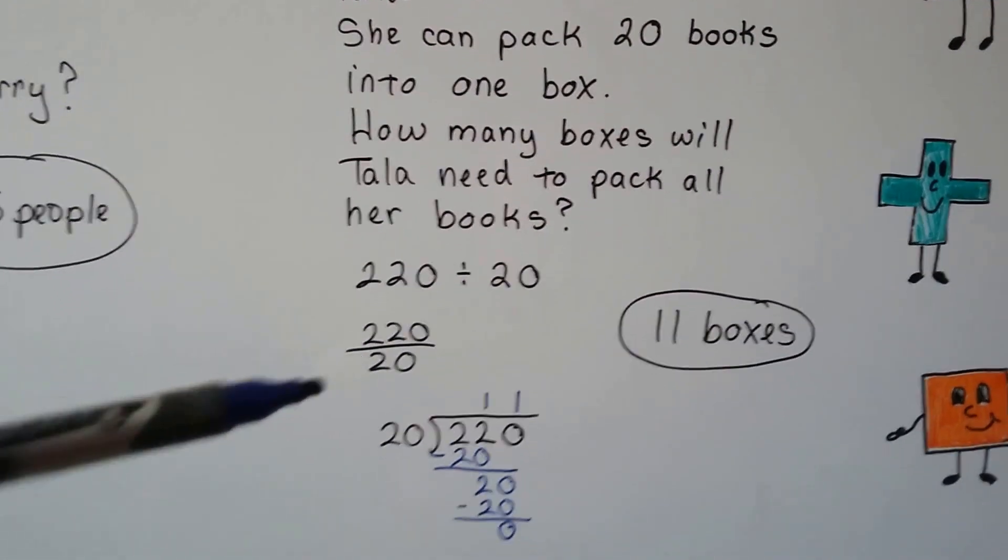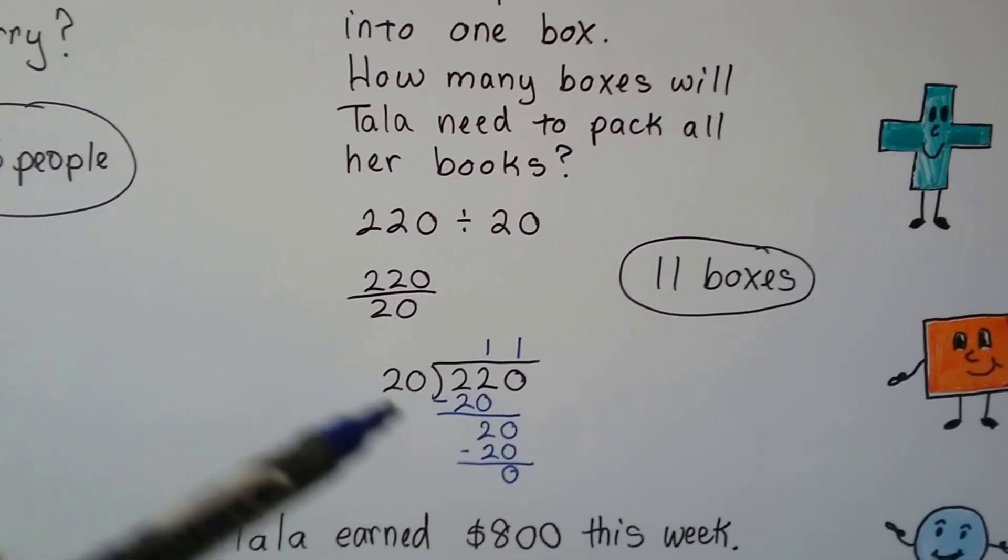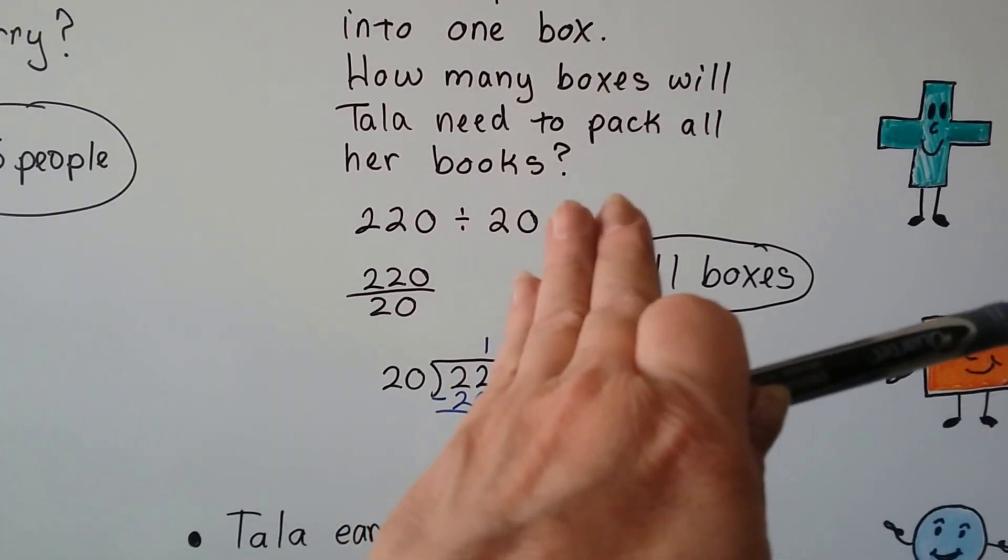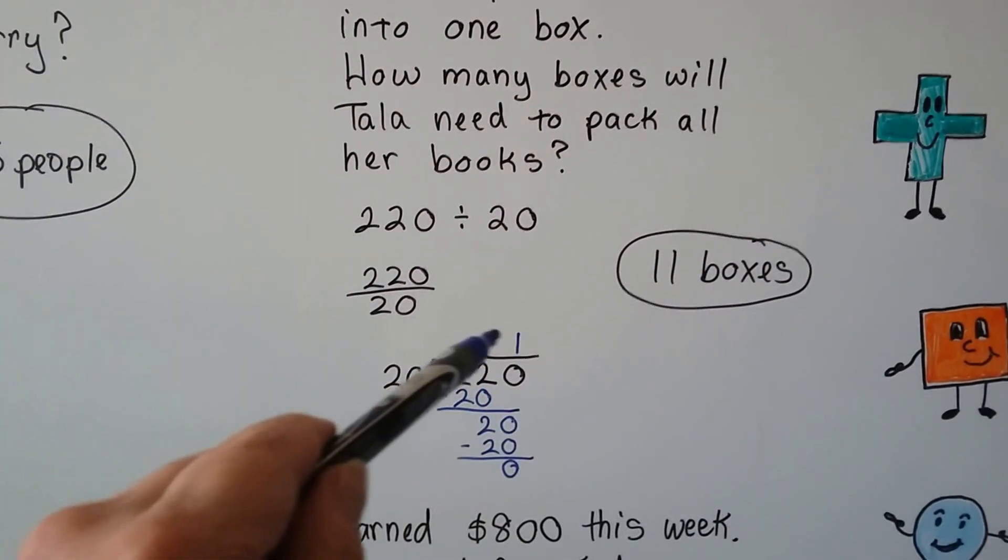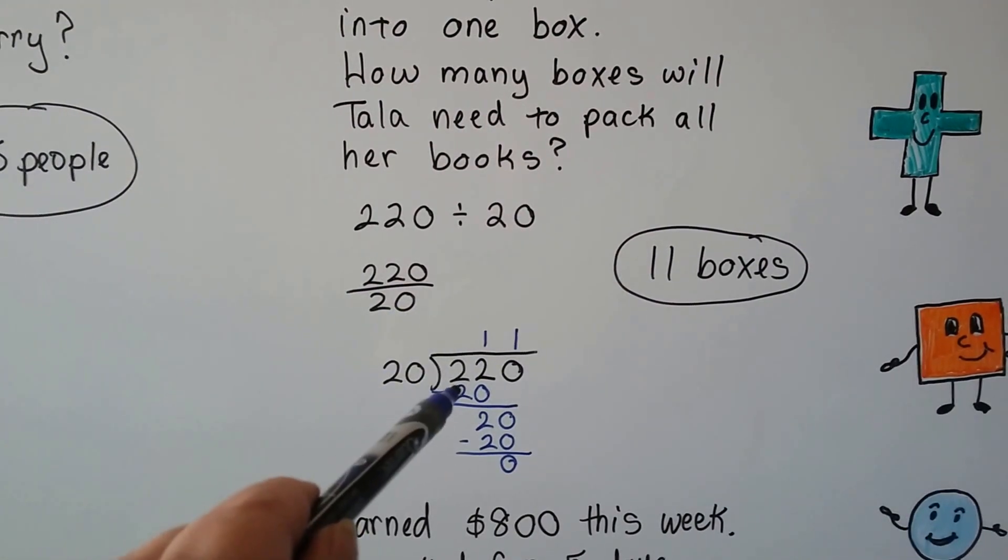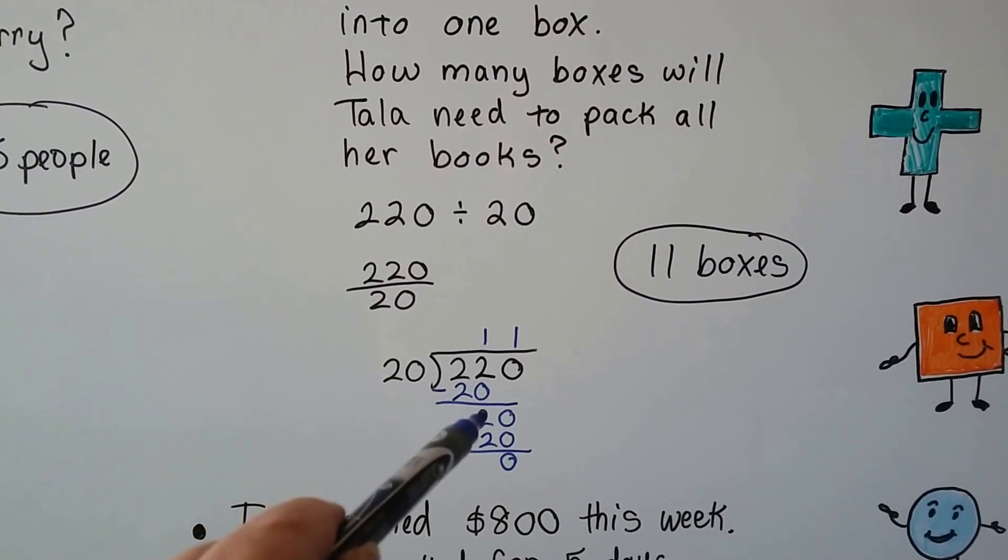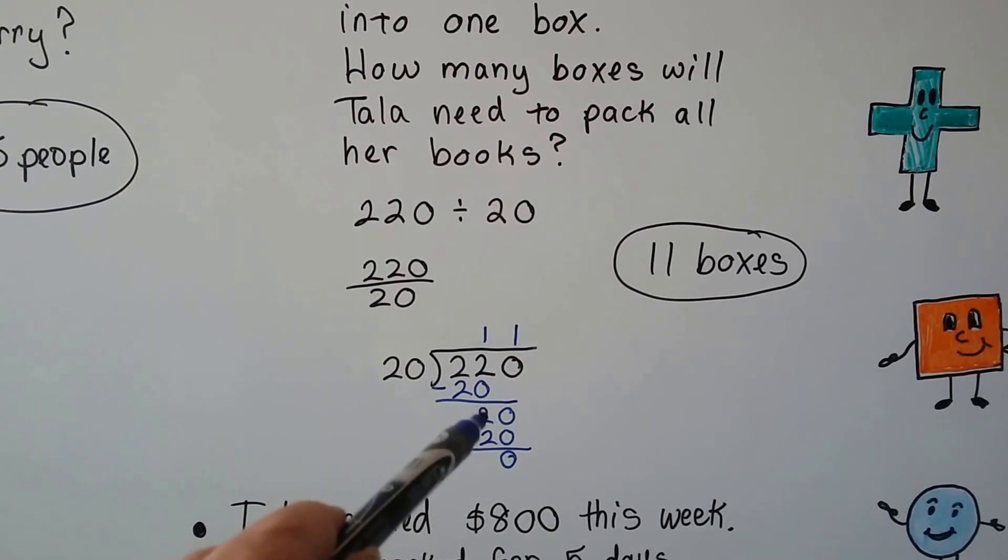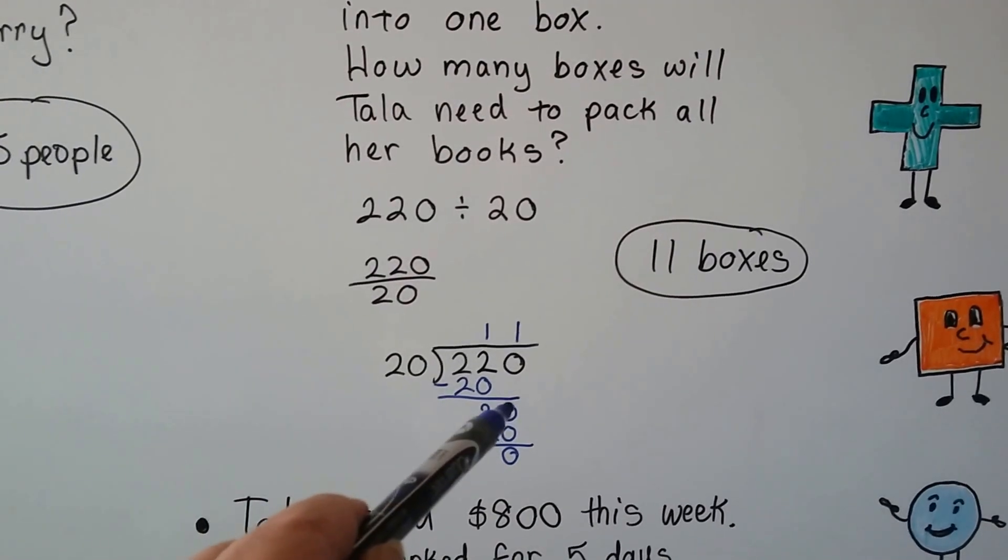It can also be written like a fraction like this. In long division, the 20 can't go into the 2, but it can fit into 22 one time. We do our multiplication. 1 times 20 is 20. We subtract. We drop this 2 down in the subtraction and now it's the 0's turn to come down.